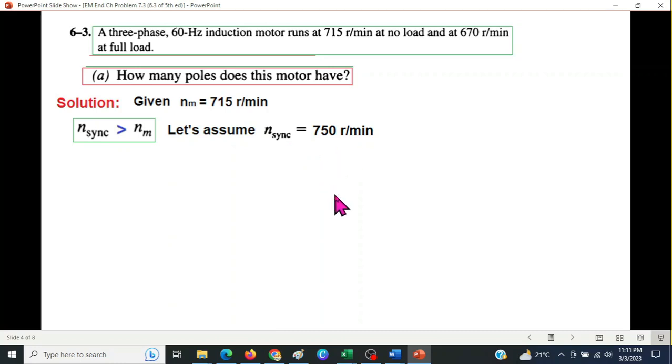And we will use this to calculate the number of poles. And this is the formula we know, that n-sync is 120 Fe over P. Fe is the line frequency, P is pole. From here, P is 120 Fe divided by n-sync. So let's plug in the values now.